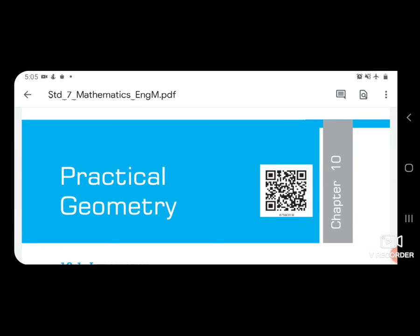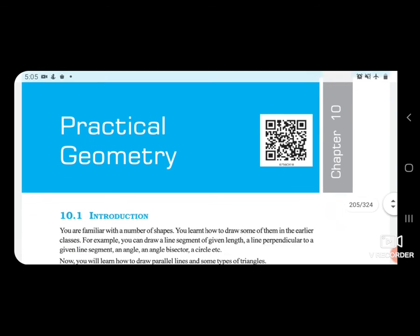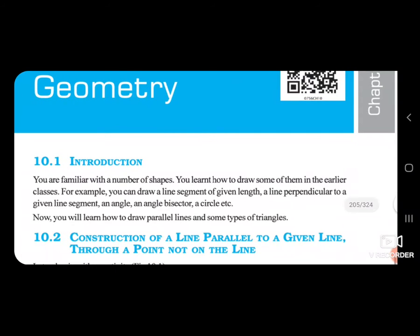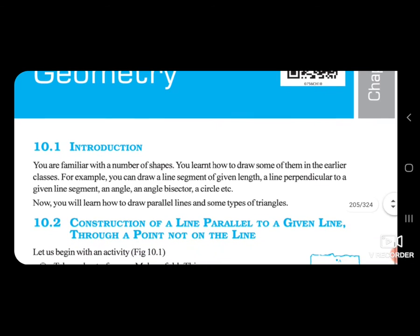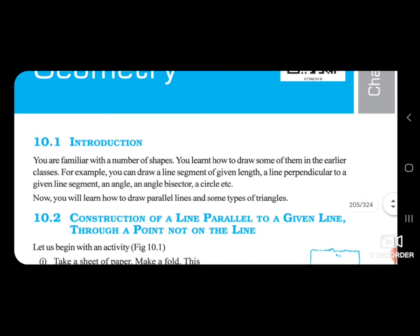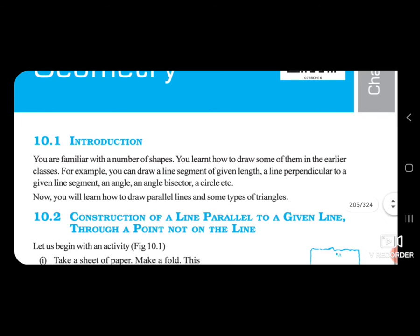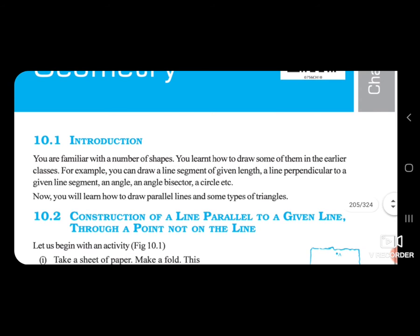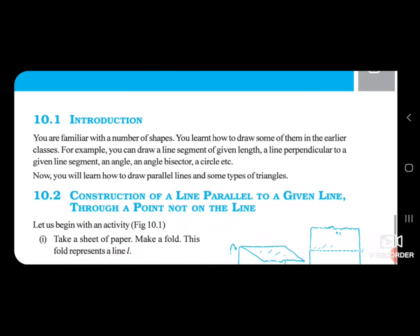Standard 7, Subject Maths, Chapter 10: Practical Geometry. Introduction — you are familiar with a number of sets. You learned how to draw some of them in earlier classes. For example, you can draw line segments of given length, or a line perpendicular to a given line segment, an angle, an angle bisector, and circles. Now you will learn how to draw parallel lines and some types of triangles.